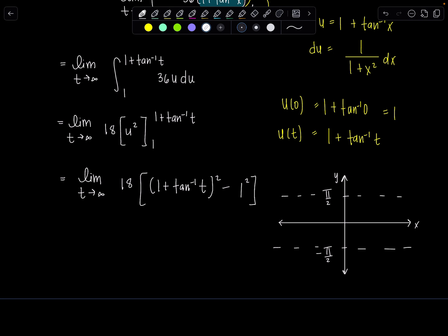It comes up in so many limit problems, especially in calculus, because the antiderivative we evaluate often. So as t approaches infinity, where's tan inverse of t going? Pi over 2. That's pi over 2. So now notice, I'm not going to write limit anymore, because I've evaluated the limit. I've got 18 times 1 plus pi over 2 squared minus 1 squared.